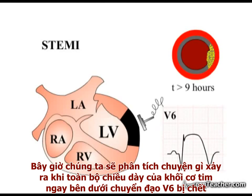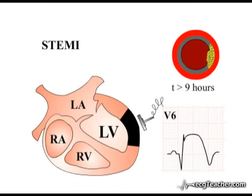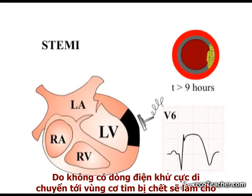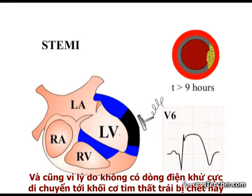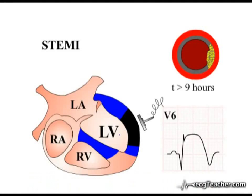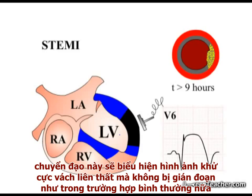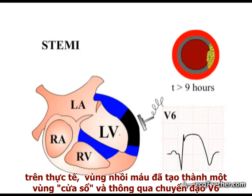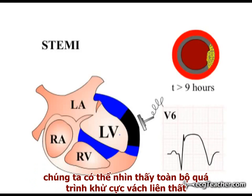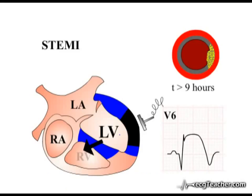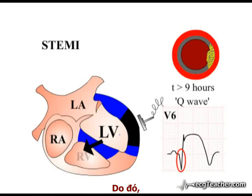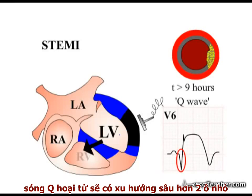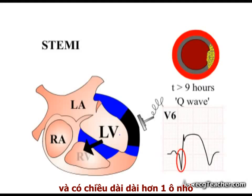When the full thickness of myocardium under lead V6 is dead, lack of depolarizing flow through the dead segment results in a reduction of R wave activity in the lead. With no current traveling through the dead left ventricular muscle underneath it, the lead now has an uninterrupted view of septal depolarization. In effect, the infarct has created a window through which lead V6 can see the entire process of septal depolarization, and the recorded Q wave becomes deeper and more prolonged. As a rule of thumb, a pathological Q wave tends to be deeper than two small squares and greater than one small square in duration.